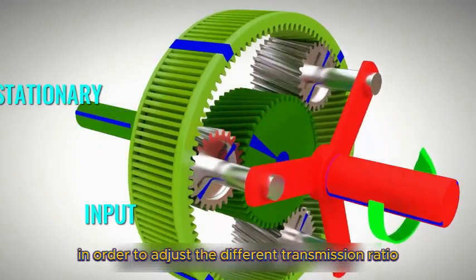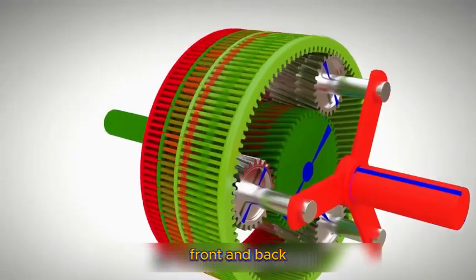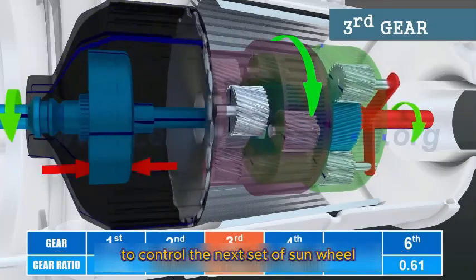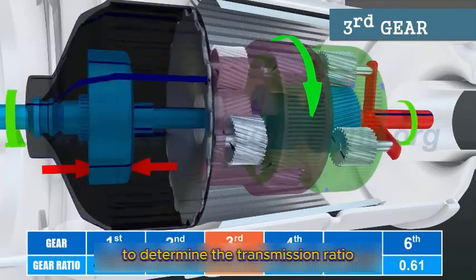In order to adjust the different transmission ratio, there are three sets of such planetary gears front and back to control each set of planetary gears, whether the sunwheel and the ring gear ring combine to control the next set of sunwheel and the next set of gear ring to determine the transmission ratio.